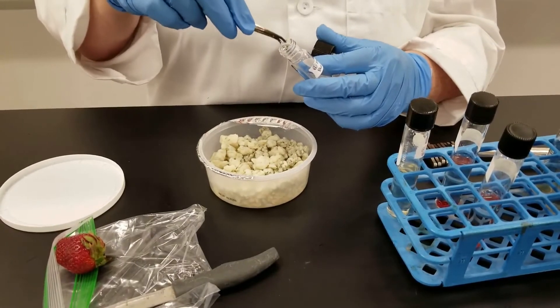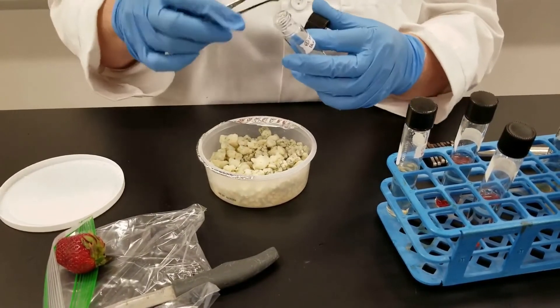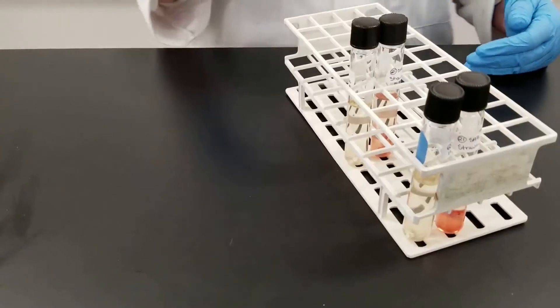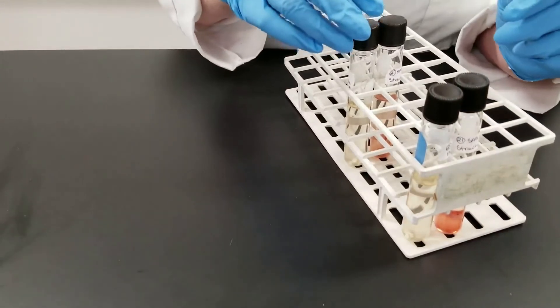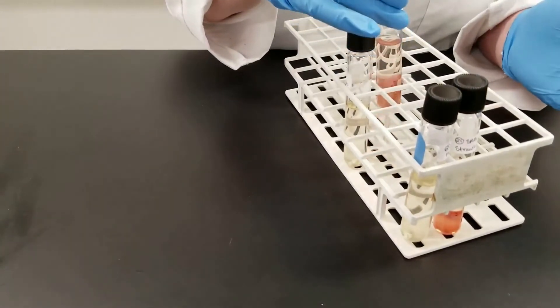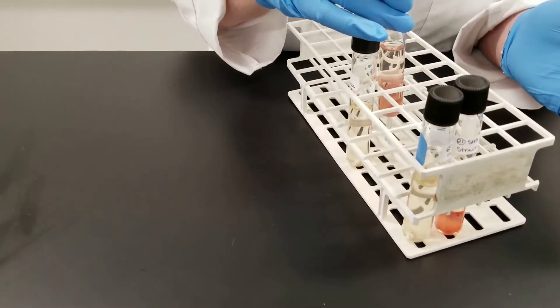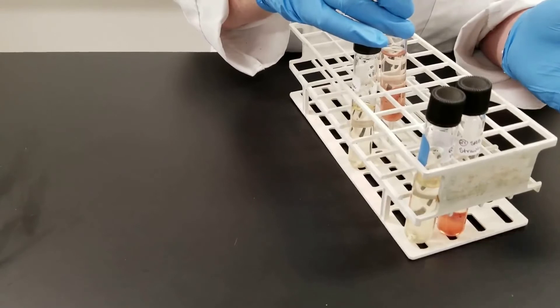We could grow this on a solid medium or liquid. So we're trying the liquid medium. This is our Sabouraud liquid broth with fungi to stimulate the growth of fungi. Remember, this has a lower pH. So it tends to inhibit the growth of bacteria.